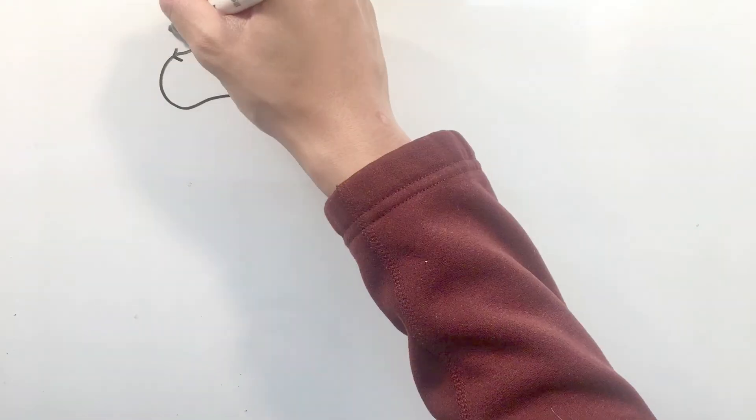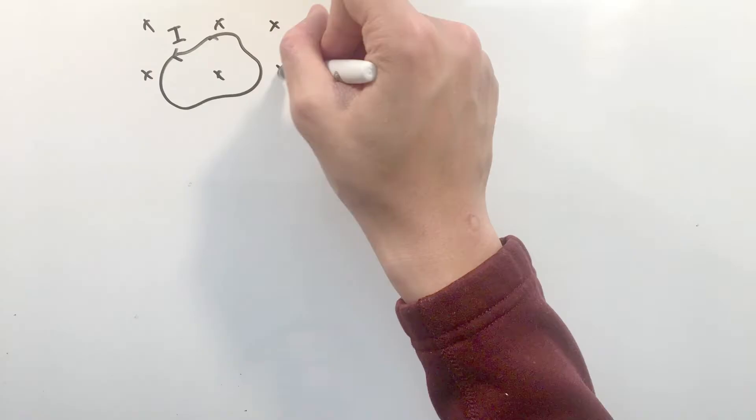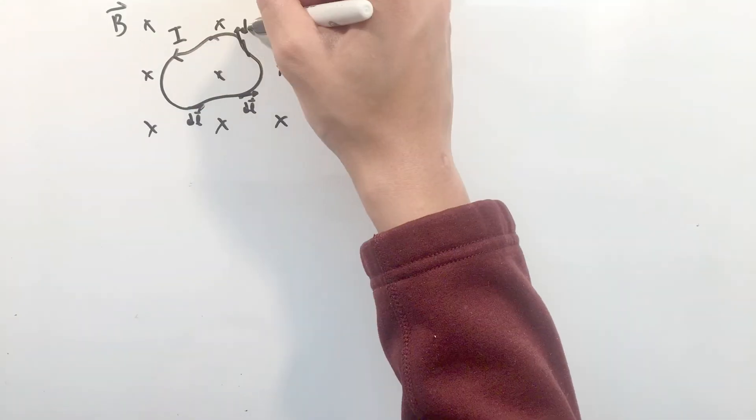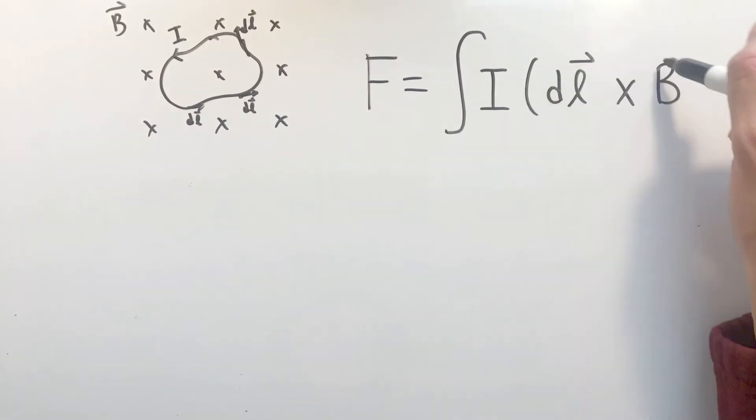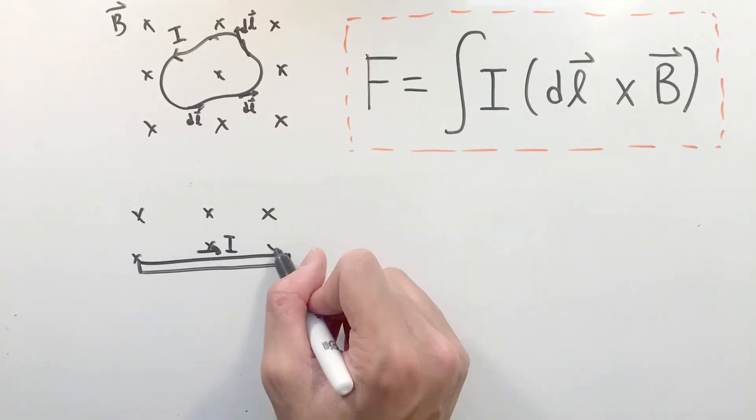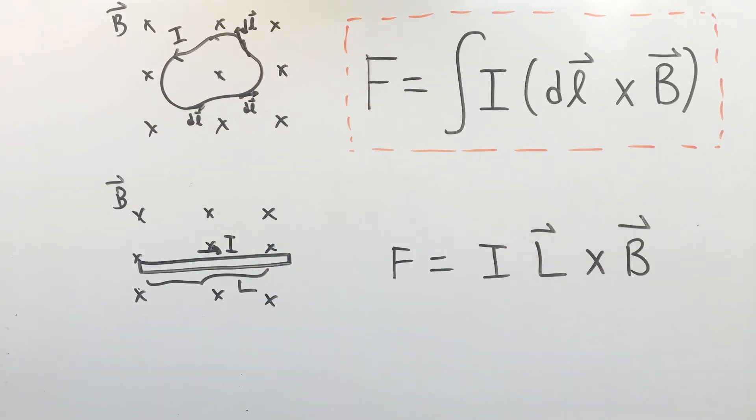However, another type of force magnetic fields can apply is on lengths of current carrying wire. The equation for this type of force is that the force equals the integral of the current times the cross product between the lengths of the wire and the magnetic field vector. However, in most cases, this equation for straight wires in uniform magnetic fields can be simplified significantly.